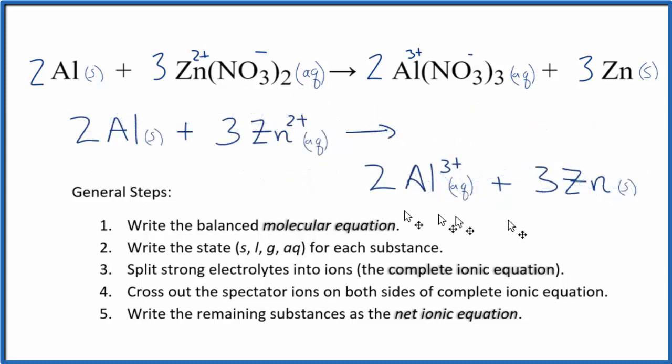And this is the net ionic equation for Al plus Zn(NO3)2, aluminum plus zinc nitrate. And this is Dr. B. Thanks for watching.